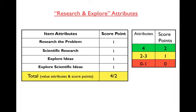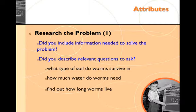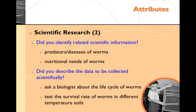The attribute list has four points to be earned, with a maximum of two score points. For the first attribute, researching the problem, ask yourself: did you include information needed to solve the problem, and did you ask relevant questions such as what type of soil do worms survive in and how much water do they need? The second attribute is scientific research — did you identify related scientific information? For example, what diseases might kill off worms, or what predators such as birds may be in the area causing the worm population to decrease? Did you describe the data to be collected scientifically, and is there a person or resource you can consult to learn more?